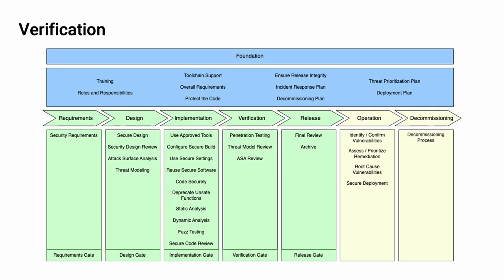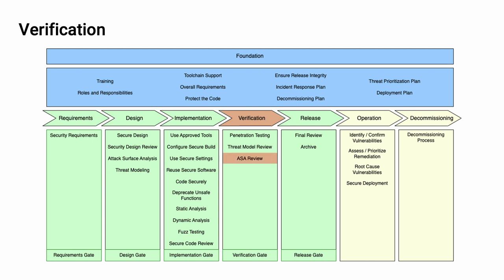Here we can see the AVCDL framework. The attack surface analysis takes place in the design phase and is used to inform activities in the implementation phase. We also need to verify that the deficiencies identified have in fact been mitigated. So in the verification phase, we do an attack surface analysis review, shown here as ASA review.